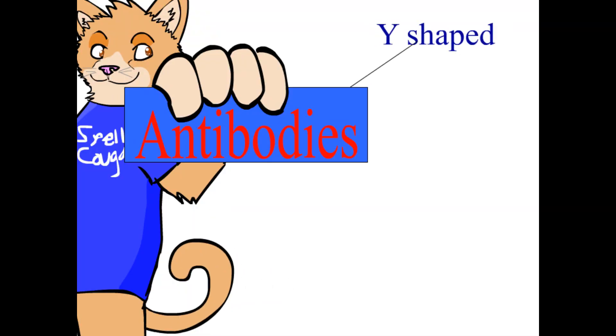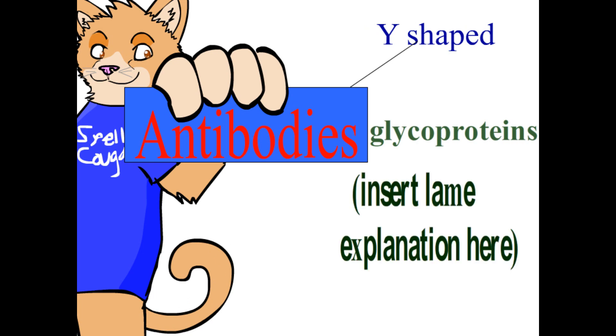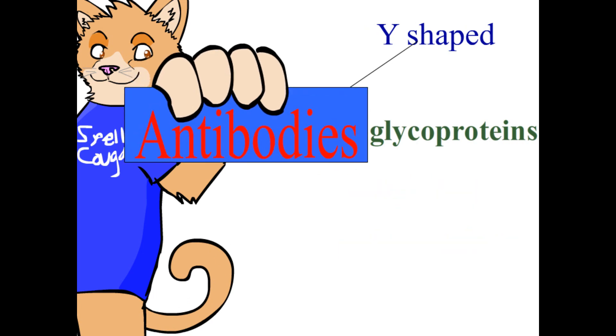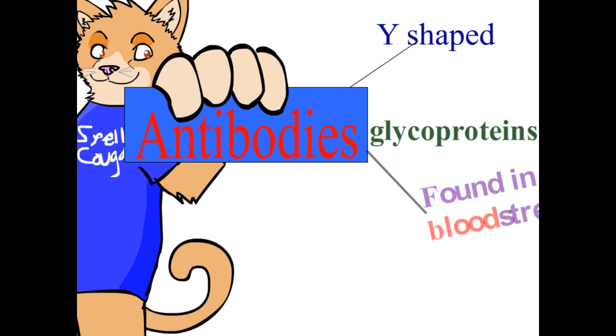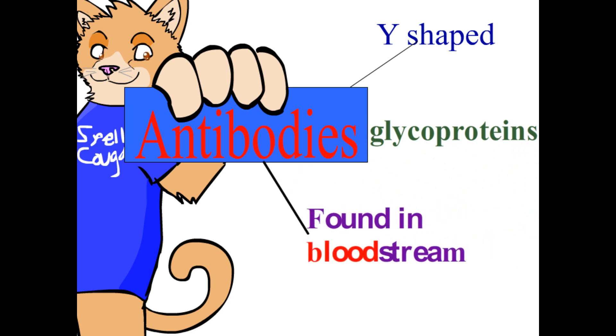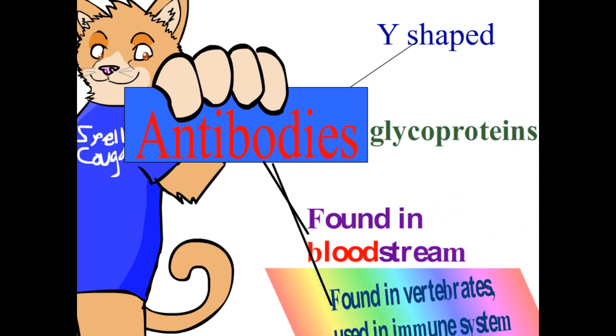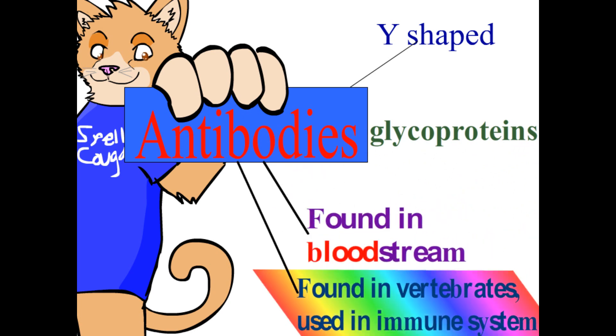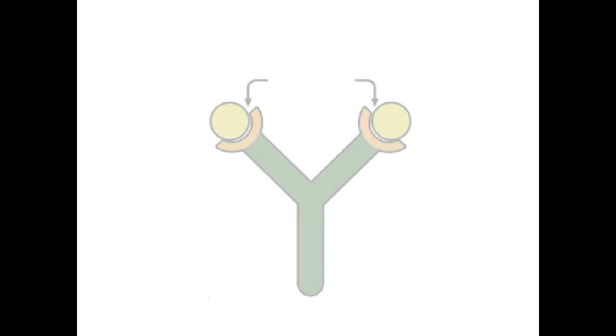Antibodies are Y-shaped glycoproteins, meaning they contain proteins that have covalently attached sugar residues, and they are found in the bloodstream or other bodily fluids of vertebrates, where they are used by the immune system.